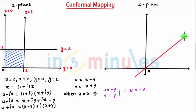When you say u equal to minus v, that means it is again a line passing from the origin with a slope of minus 1. So this is u equal to minus v.